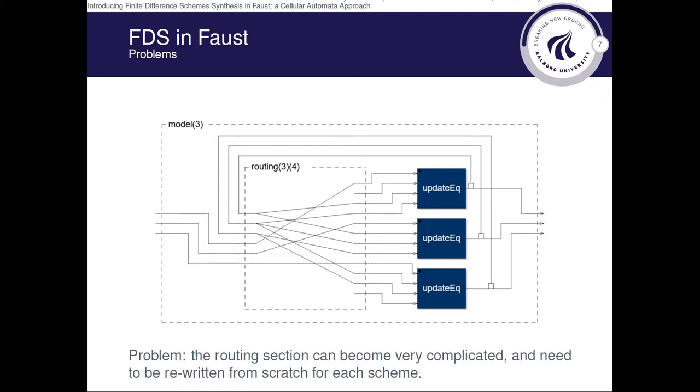And for this reason, it was decided to find a more common way to write routing functions for different scheme types. And to do this, we took a look at cellular automata algorithms.